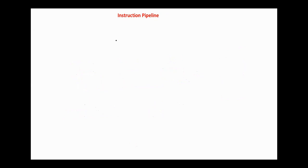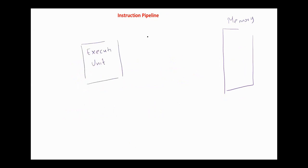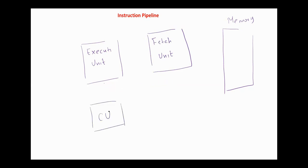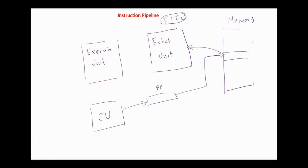Consider a computer with two units: an execution unit and a fetch unit. Whenever the execution unit is not using the memory, the control unit can increment the program counter and read the next instruction into the fetch unit. A first-in first-out buffer can be used to hold the instruction or instructions read from memory. In this case, the FIFO buffer may have several instructions waiting for decoding and processing.